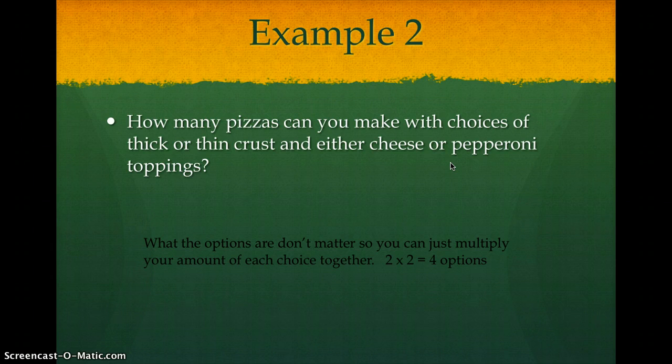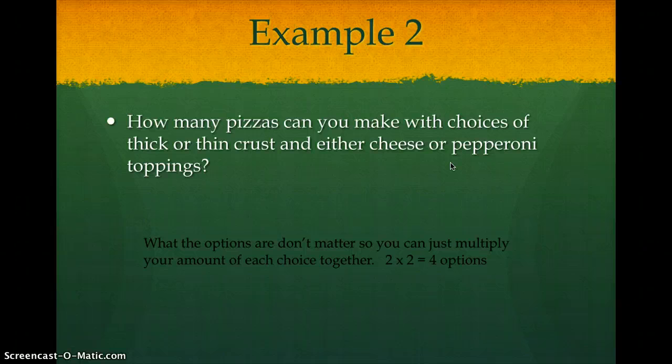The options don't matter, so you can just multiply together. So you've got two types of crust and you've got two different types of toppings, cheese and pepperoni. So two times two gives you four different options.